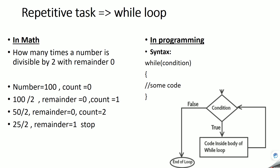In math, sometimes we do some calculation again and again. Let's see an example: we want to find out how many times a number can be divided by 2 with remainder 0. Let's take the number 100. Initially the count is 0.